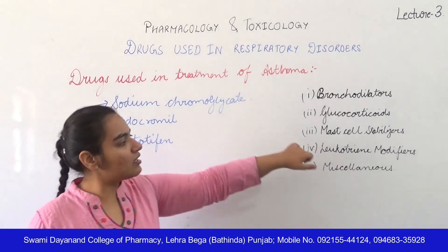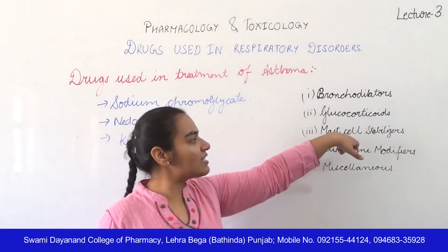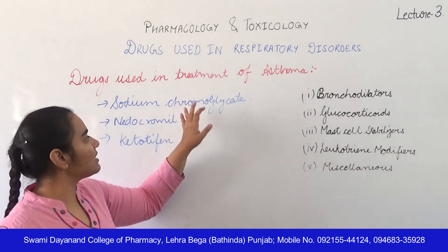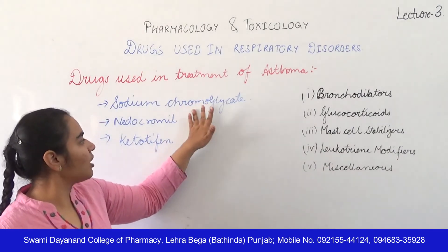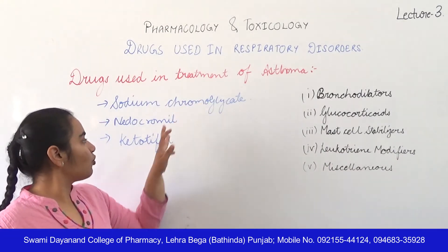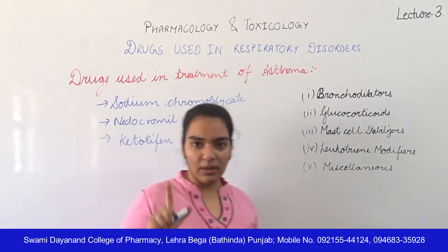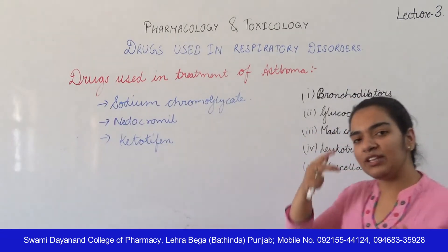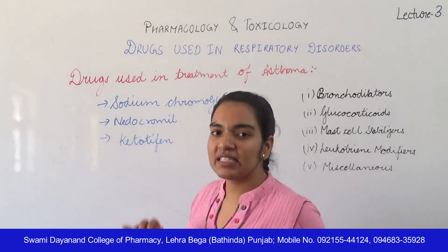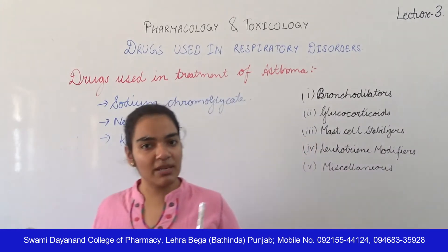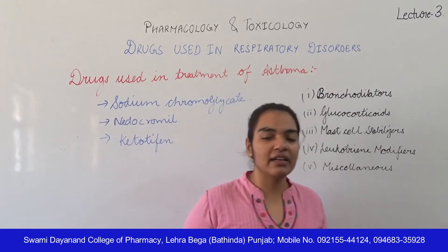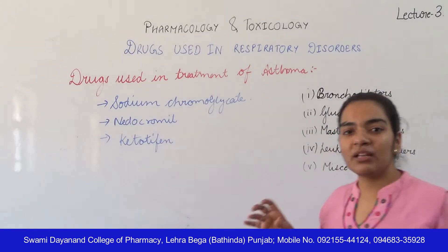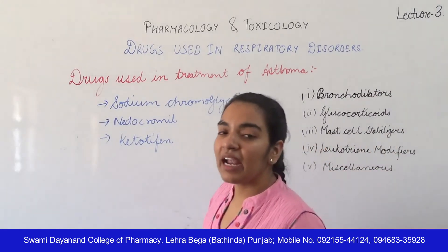Ketotifen is used at 1–2 mg twice a day. This was the third class of mast cell stabilizers. Mast cell stabilizers include three agents: sodium chromoglycate, nedocromil, and ketotifen. All three prevent the release of chemical mediators responsible for the asthma attack.